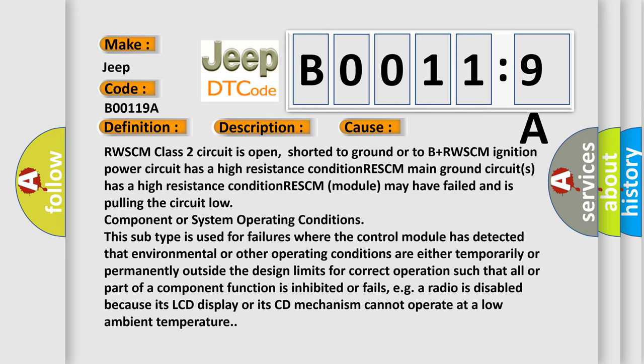RWSCM module may have failed and is pulling the circuit low. Component or system operating conditions: This subtype is used for failures where the control module has detected that environmental or other operating conditions are either temporarily or permanently outside the design limits for correct operation such that all or part of a component function is inhibited or fails, e.g. a radio is disabled because its LCD display or CD mechanism cannot operate at a low ambient temperature.